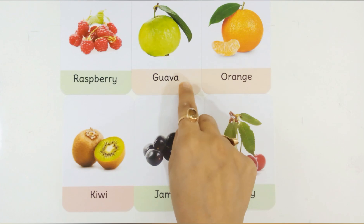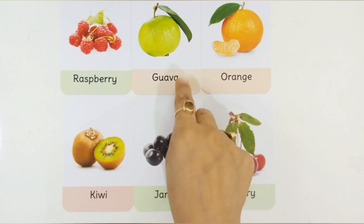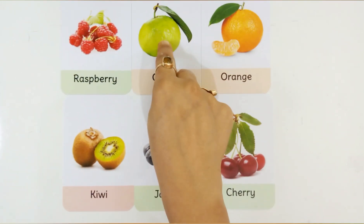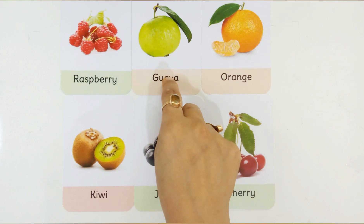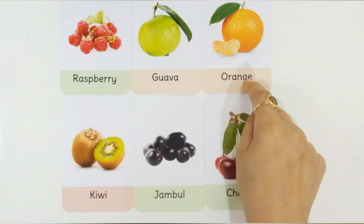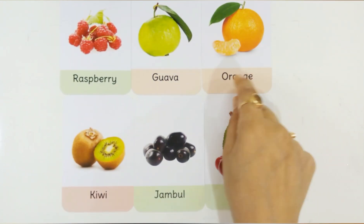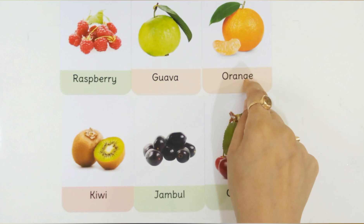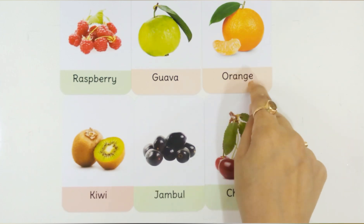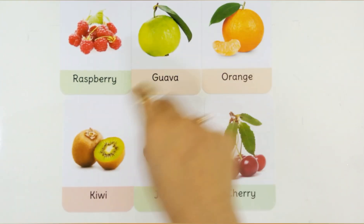G for Guava. This is Guava. Guava is a fruit. O for Orange.